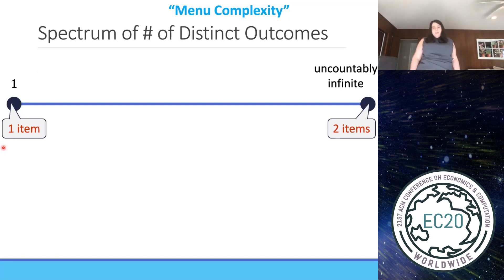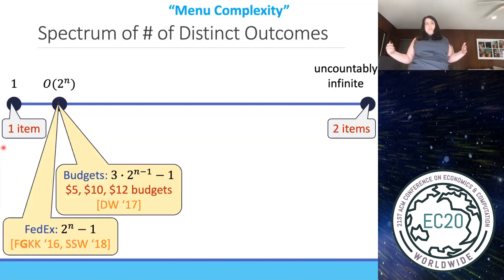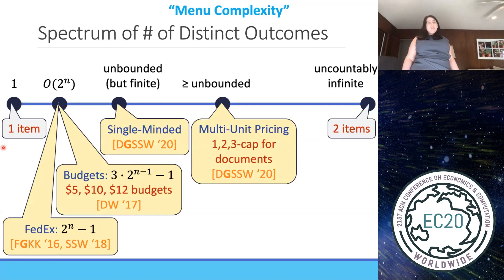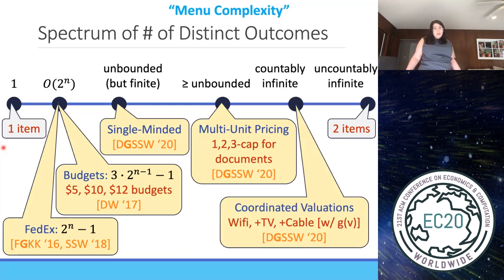Okay, so let me wrap up and contextualize this and all the other work. We have the spectrum of the number of distinct outcomes or menu complexity going from one for one item to uncountably infinite for two items. FedEx by Fiat et al was coming in at exponential proved to be tight by Saxena, Schwartzman, and Weinberg. And then budgets, which was studied by Devaner and Weinberg in EC17 was also shown to be exponential. What we showed was that the single-minded problem is unbounded, but for the three item case, the three bundle case, finite. And we also extend our lower bound of unbounded that I just showed you to the multi-unit pricing problem as well. Finally, we introduce another setting called coordinated valuations, which is just a little bit more complex, and show that it comes in at countably infinite to show the distinct spectrum going from one to uncountably infinite. So we really fill out this spectrum here.